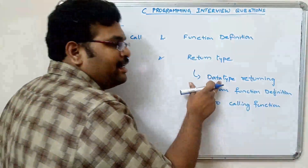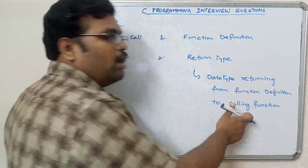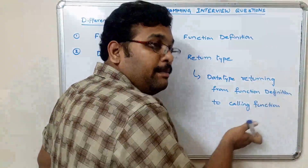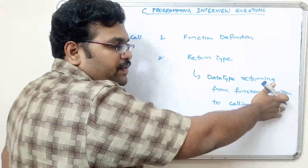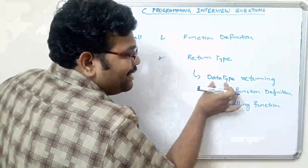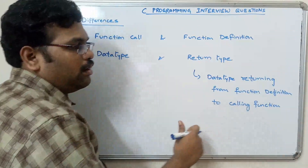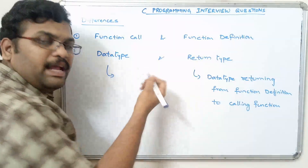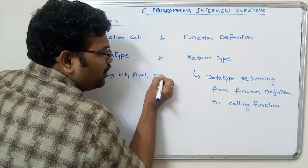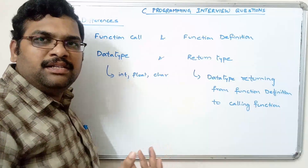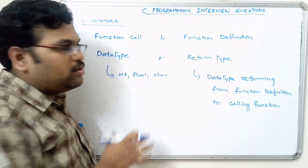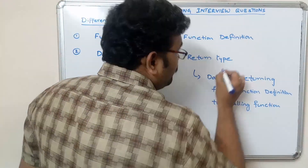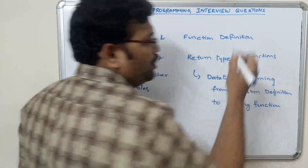Return type is the data type returning from the function definition to the calling function. In the calling function we write the function call, and when the control executes this function call it moves to the function definition. Once execution of the function definition is complete, it comes back to the calling function. The data type returning from the function definition to the function call is called the return type.